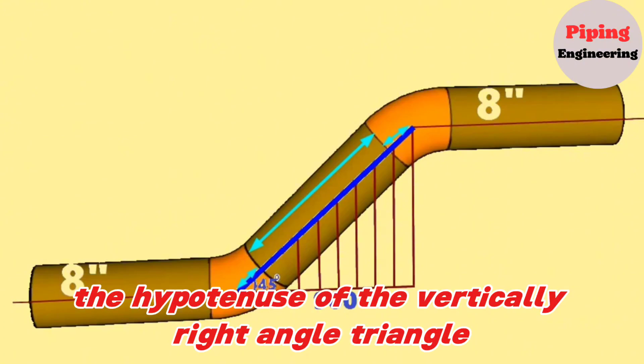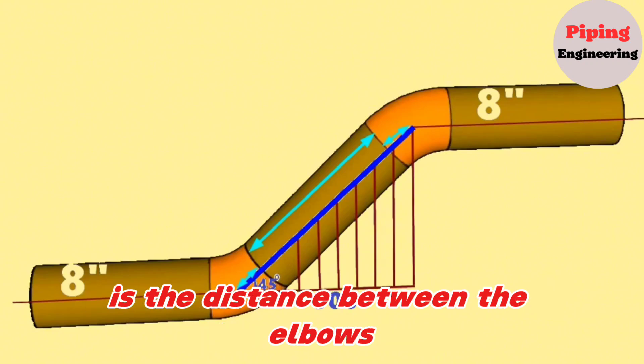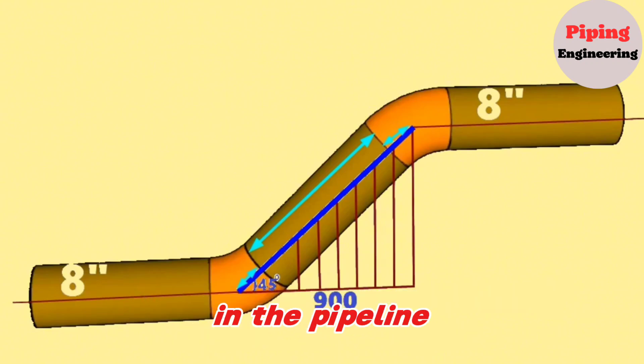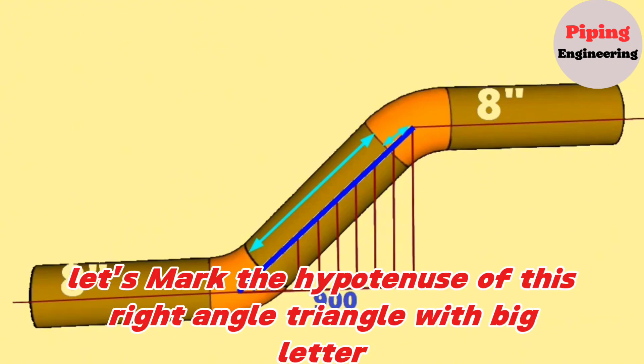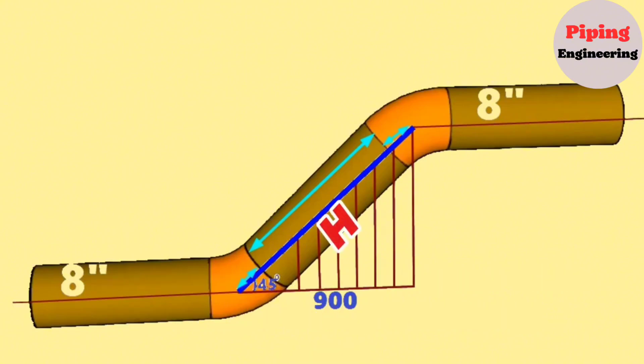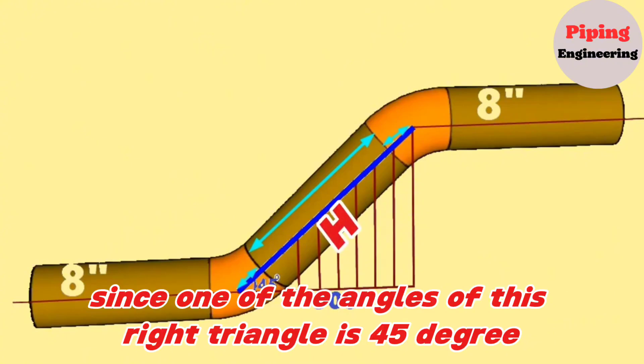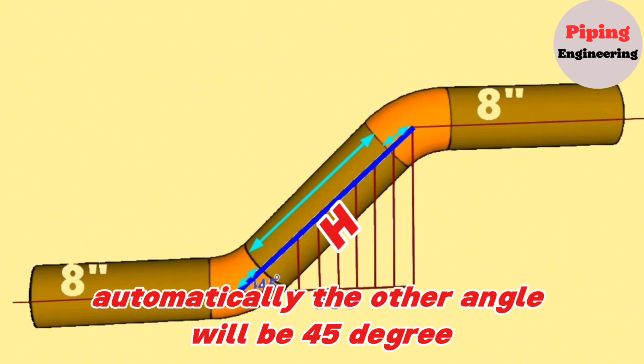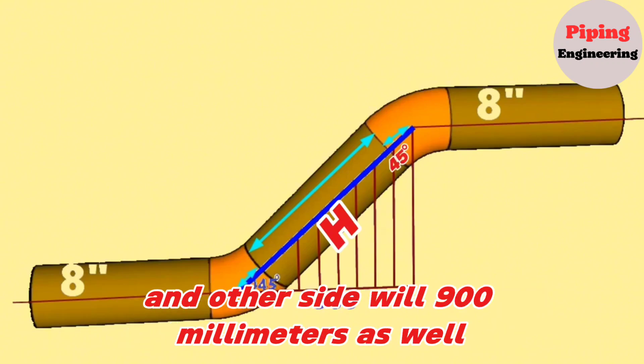The hypotenuse of the right-angle triangle is the distance between the elbows in the pipeline. Let's mark the hypotenuse with the letter H. Since one angle of this right triangle is 45 degrees, automatically the other angle will be 45 degrees and the other side will be 900 millimeters as well.